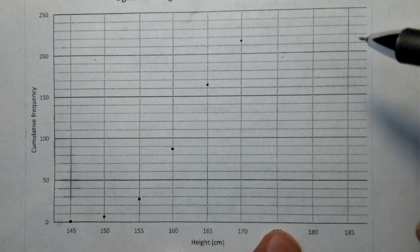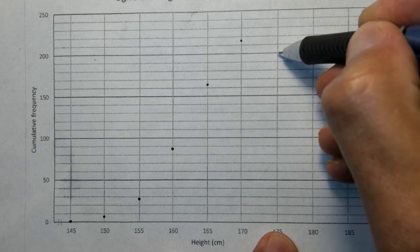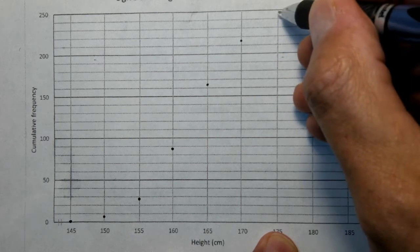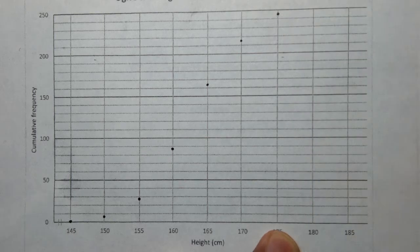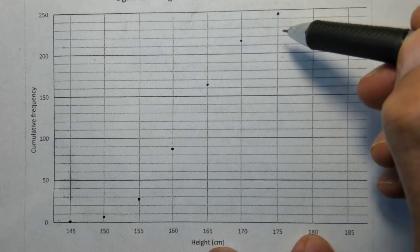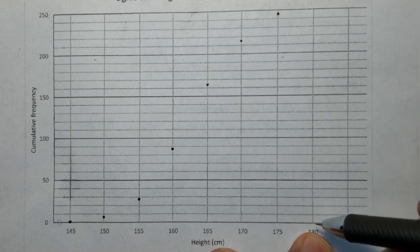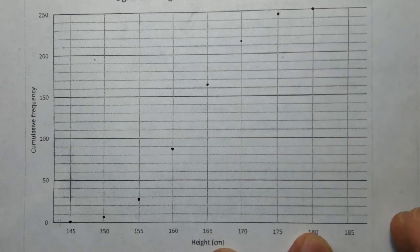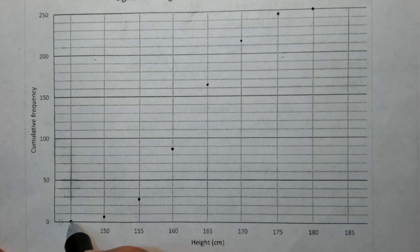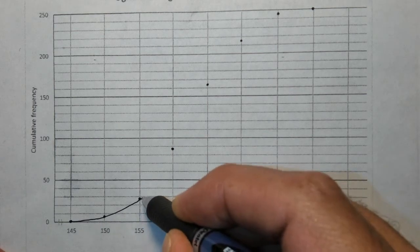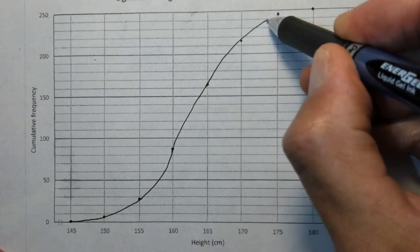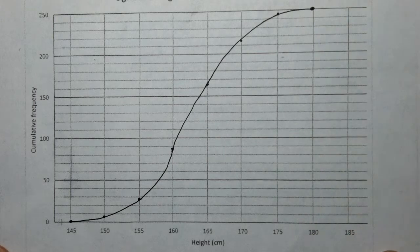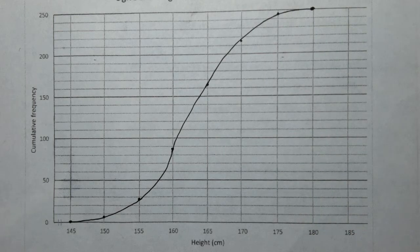175 goes to 247, and 180 will be at 250 which goes way up there. Now hold your pen steady and join those dots. Try not to have sudden kinks or sharp edges in this diagram because you're going to make readings from it. So there's our ogive curve. Now we can move on to the questions.